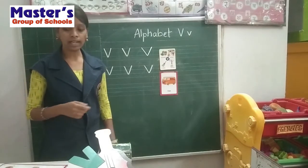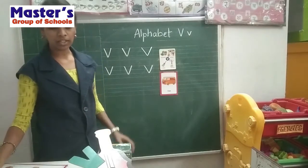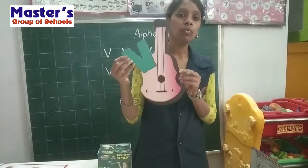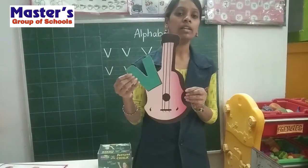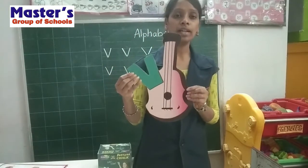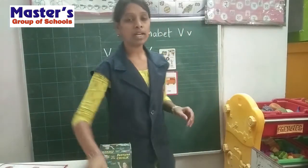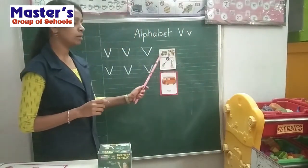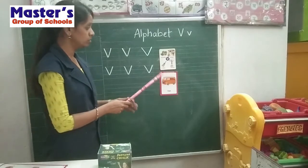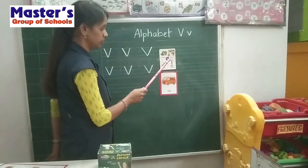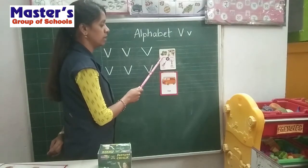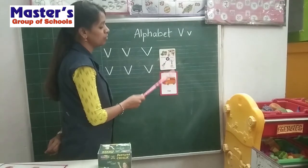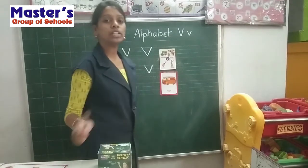Okay children, look here. V for violet land. Here, some more related pictures are there. V for vegetables. V for violet land. V for van.